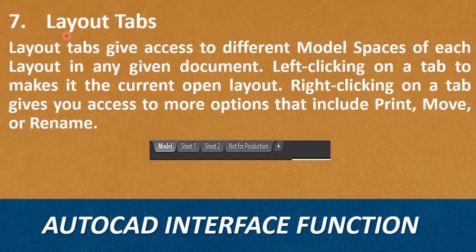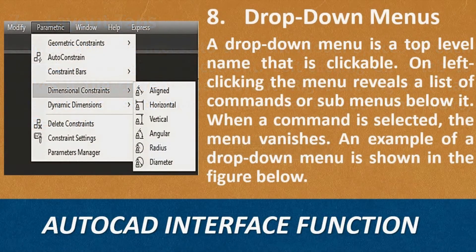Seventh, Layout Tabs. Layout Tabs give access to different model spaces for each layout in any given document. Left-clicking on a tab makes it the current open layout. Right-clicking on the tab gives you access to more options that include Print, Move, and Rename.